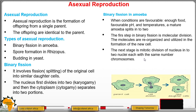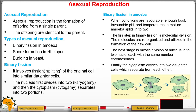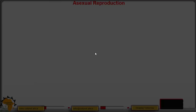Mitosis helps in restoring the same state as the parent cell, so the number of chromosomes present in the parent cell is the same as the number present in the daughter cells. After the division of the nucleus, what follows is cytoplasmic division. After that, the two daughter cells separate from each other.